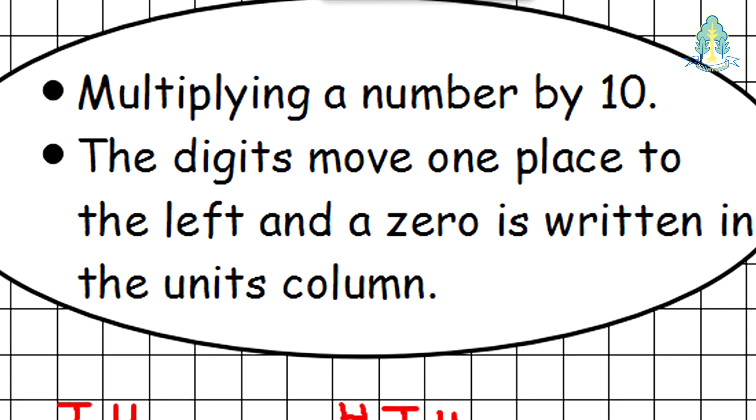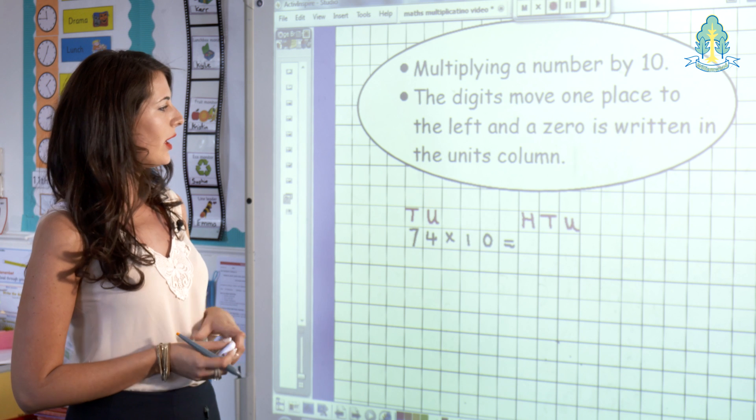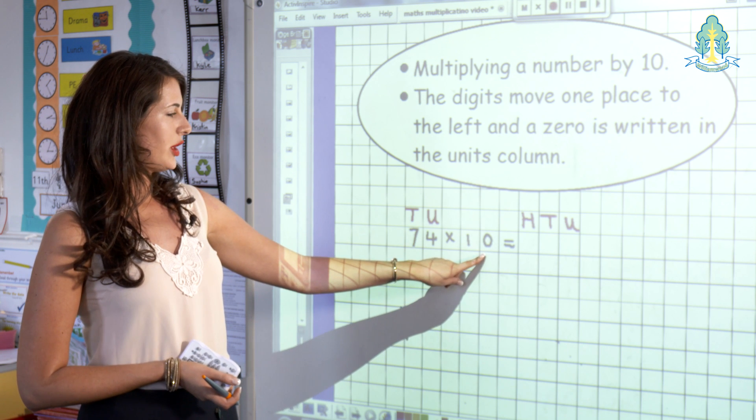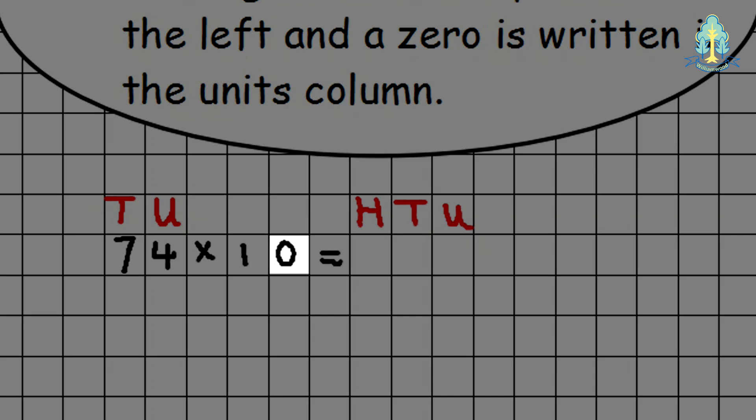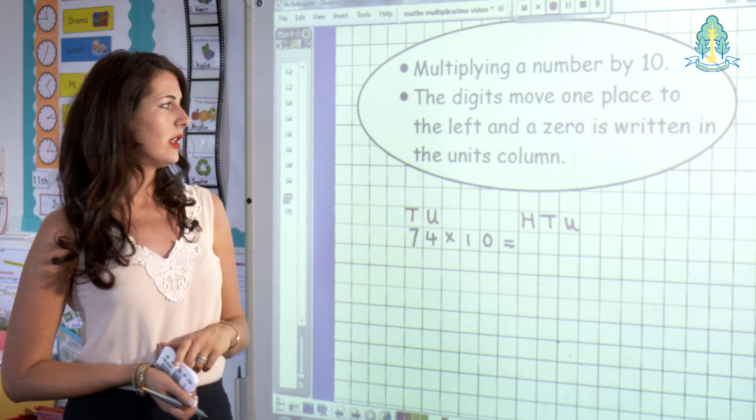Before we carry out long multiplication, let's look at how we multiply by 10. In this example, 74 multiplied by 10. We often remind the children that there is one zero in the 10, which helps them remember that the digits only move one place to the left.